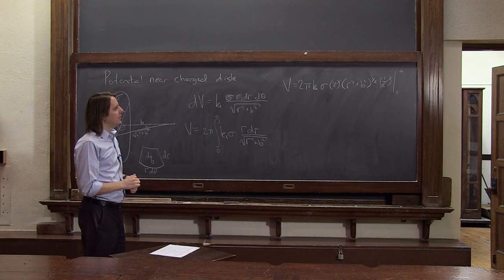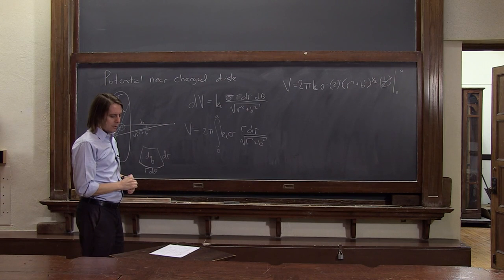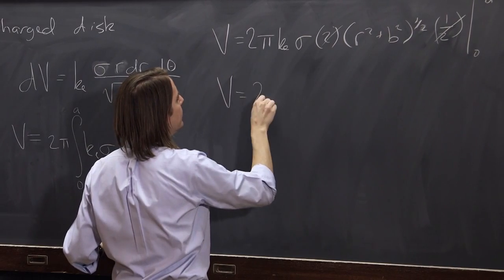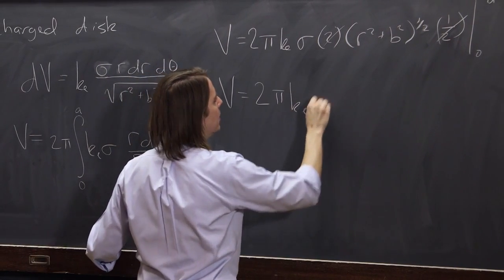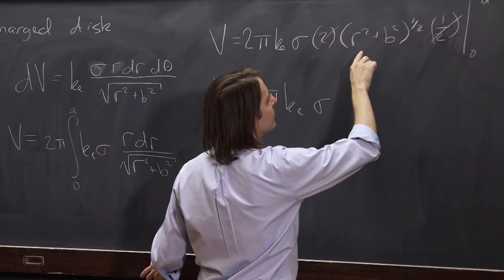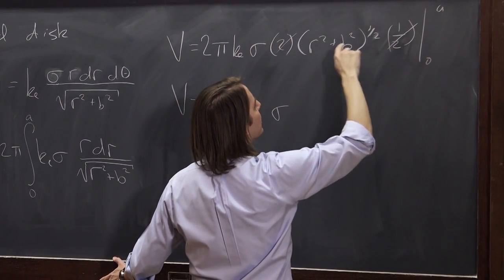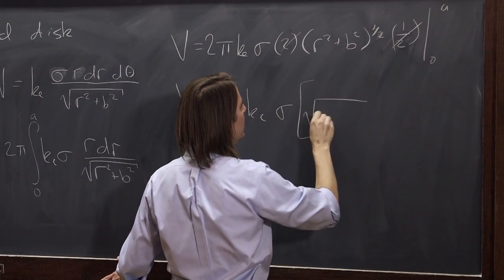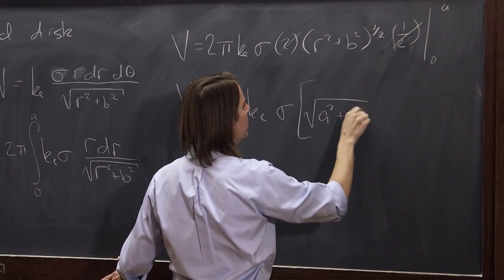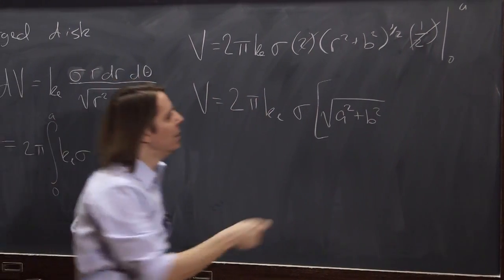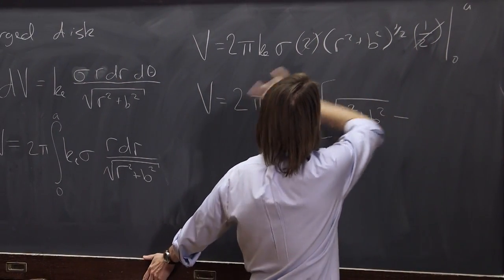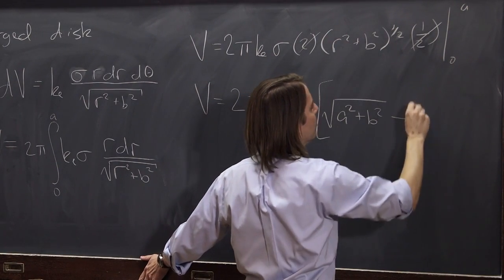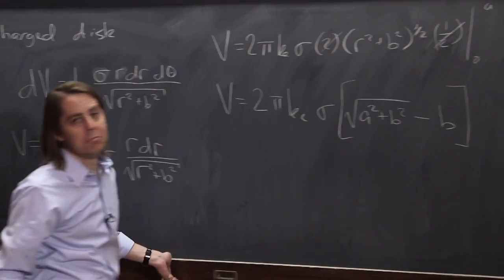And now all we've got to do is apply our limits. So the potential, v, is 2 pi ke sigma. And it's the square root of a squared plus b squared. We plug in the a minus all this stuff again. And the square root of that's 0, b squared, which is minus b. Square root of b squared is b.